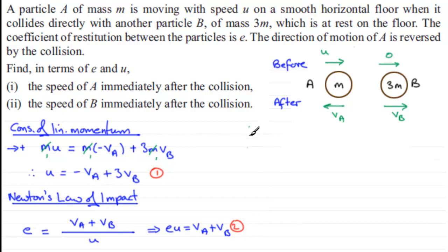Now, all I've got to do is just solve these two equations simultaneously. So, I could, for instance, add the two equations, 1 and 2. If I do that, I've got u plus eu, which I could factorise actually, pull out a u, and we've got 1 plus e. And that's going to equal, well, the minus VA plus VA, that cancels out to 0. 3VB plus another VB is 4VB. So, if we divide both sides by 4, we end up with the final velocity of B equaling a quarter of u multiplied by 1 plus e. So, there's our final velocity of B.